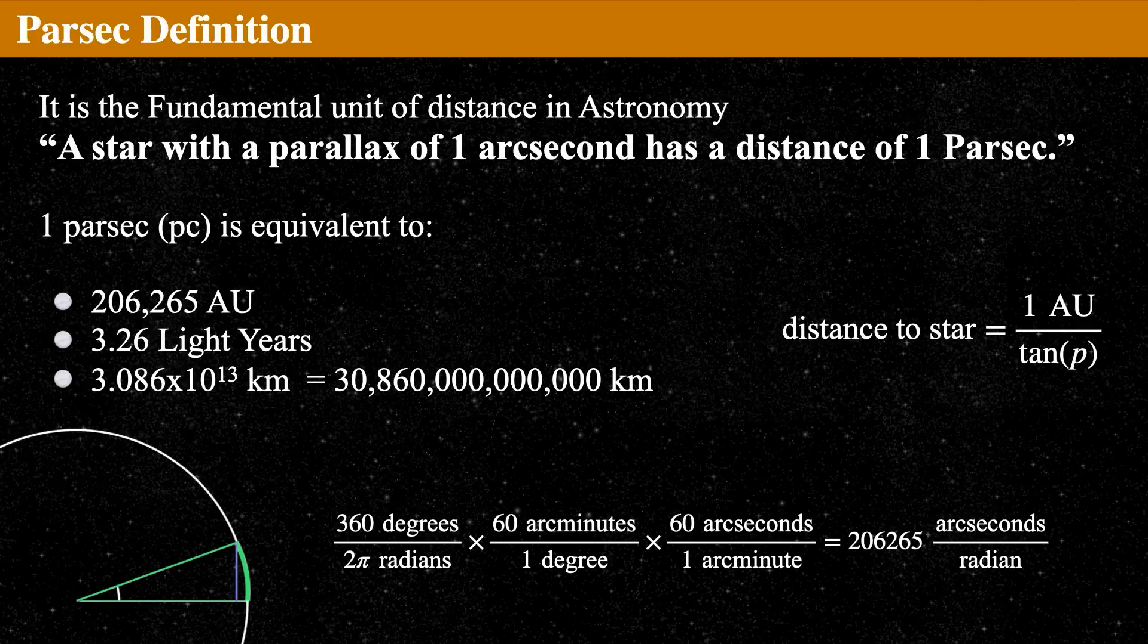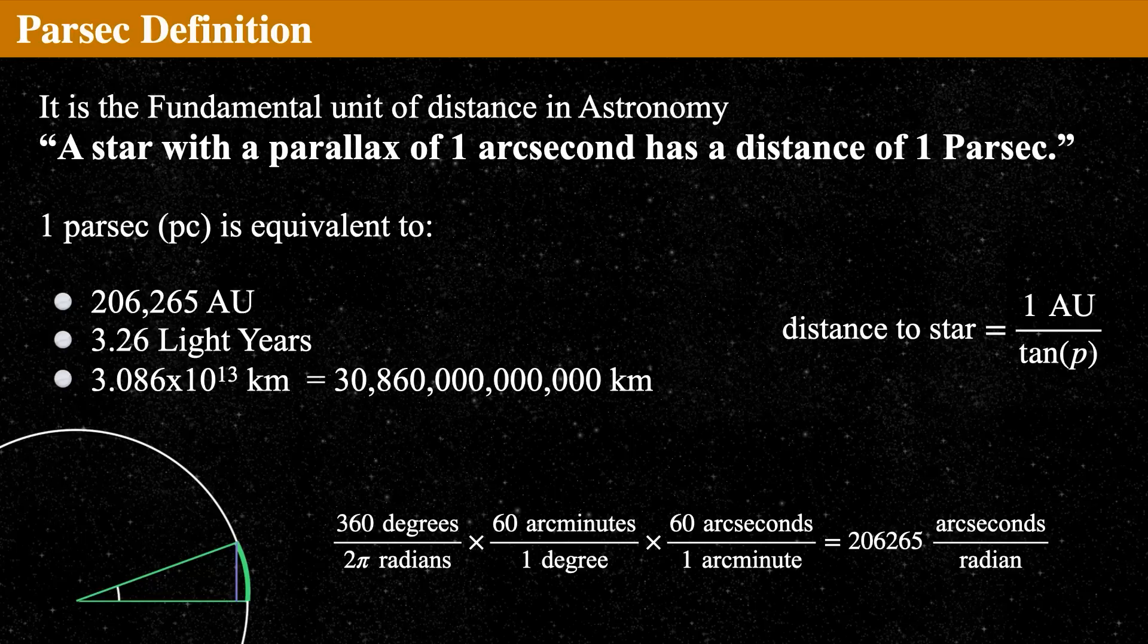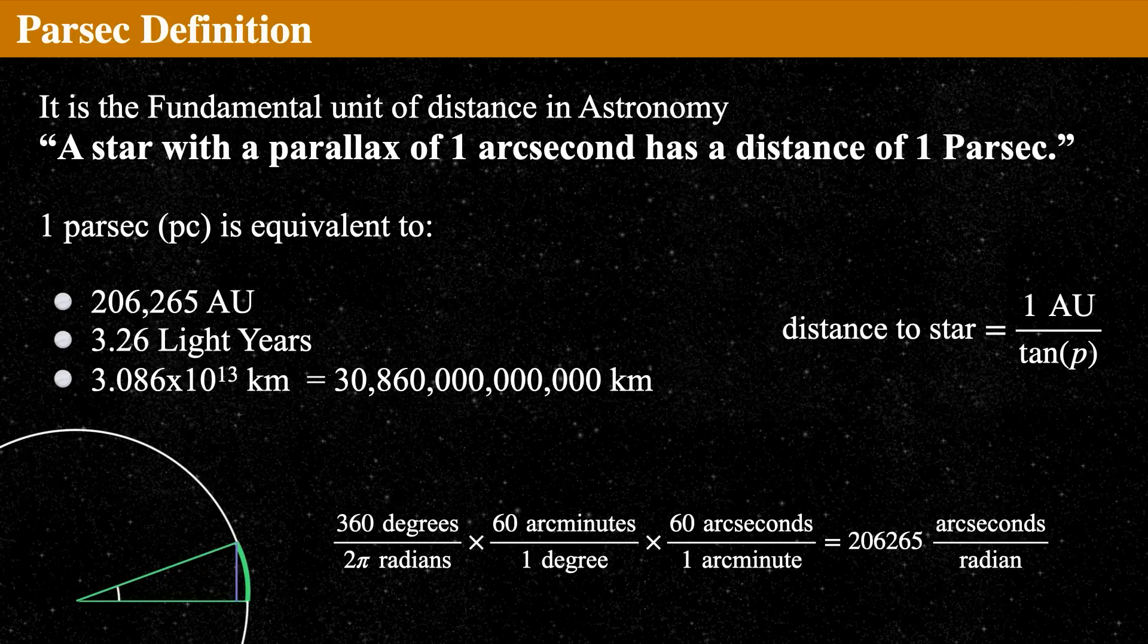Now take 206,000 of those astronomical units. That's a long ways out. Getting to the next star is a long, long, long ways. How far is 206,265 astronomical units? It's about 30 trillion kilometers or about 18 trillion miles, or it's about three and a quarter light years.